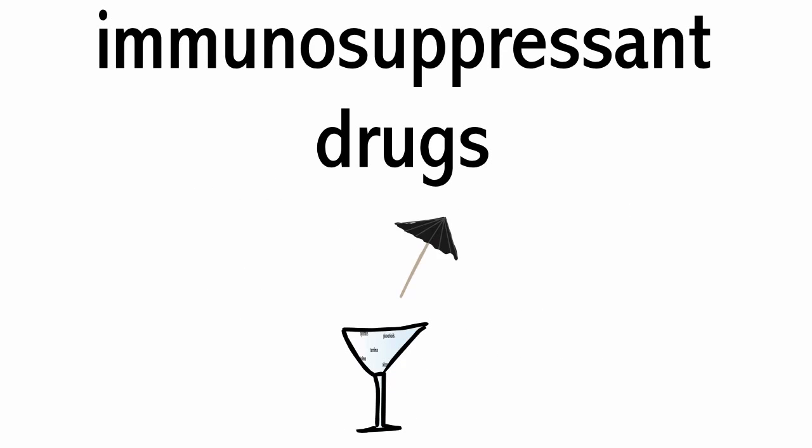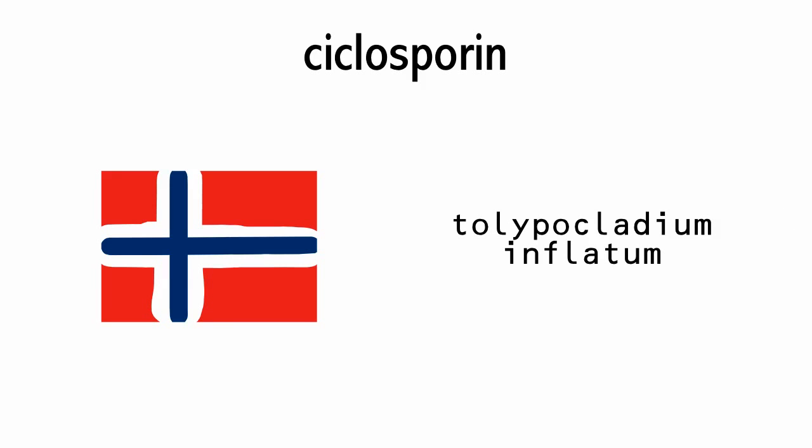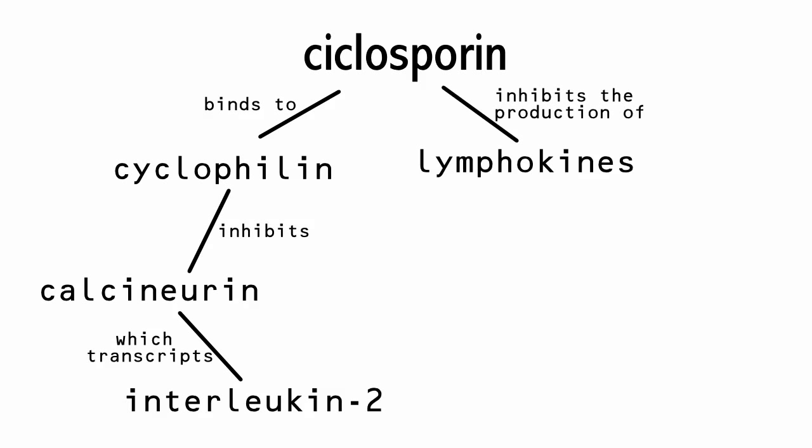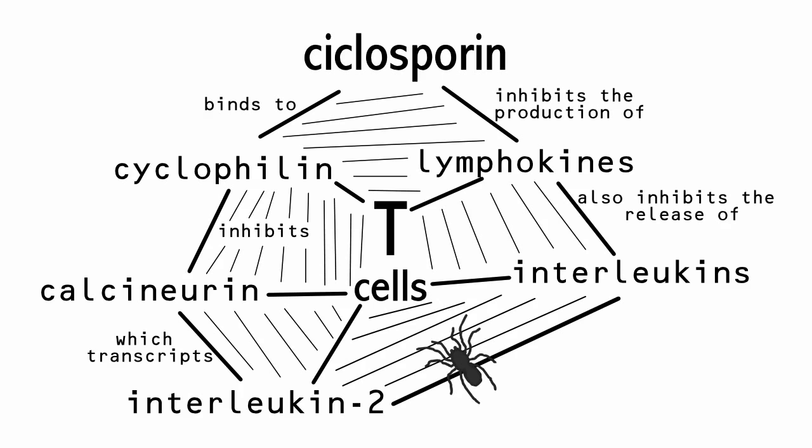One of the major ones is cyclosporine, which incidentally was discovered by Norwegians in a fungus called tolyptocletum inflatum. So cyclosporine is specifically aimed via a barely comprehensible chain of reactions at T cells, which are one of the main players in transplant rejection. It basically stops them from working properly, thus protecting the donated lungs.